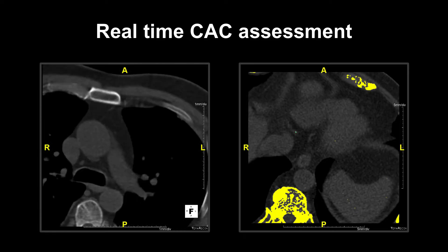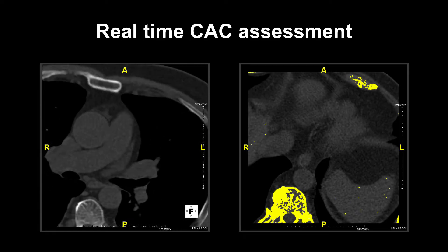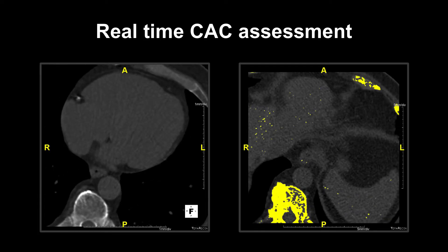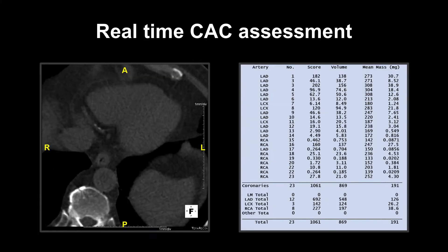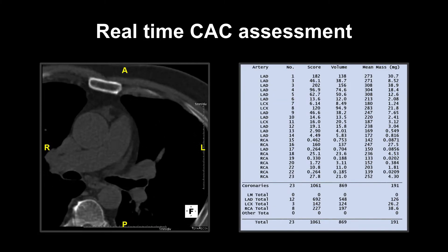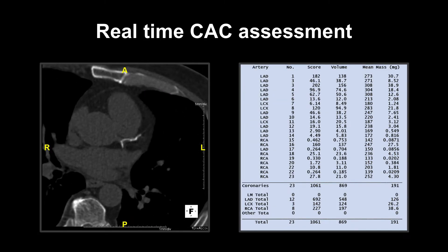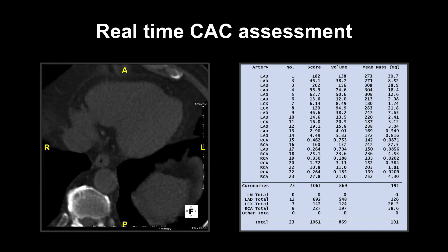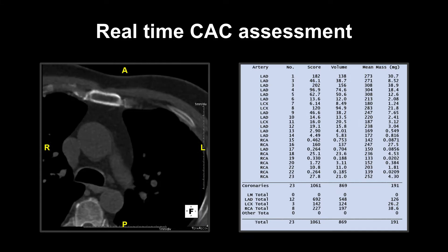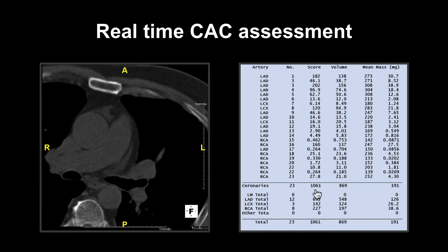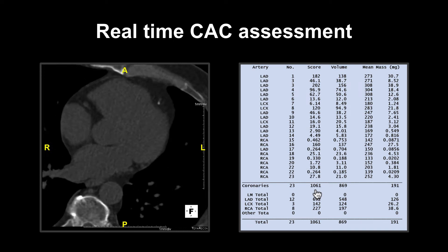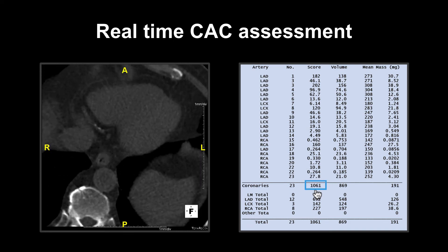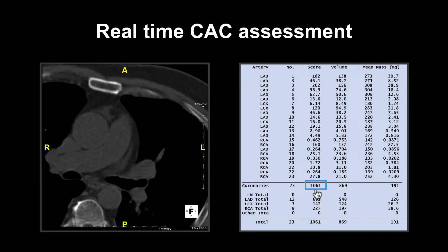Once all of the coronary calcium has been marked and colour-coded appropriately, we are able to receive an output of the total coronary artery calcium. In this particular case, we can see that the total coronary artery calcium score for all of the coronary arteries was 1,061 Agatston units.